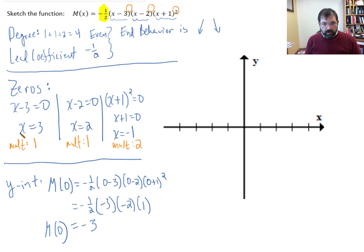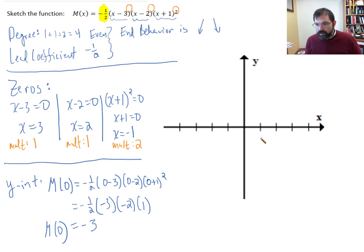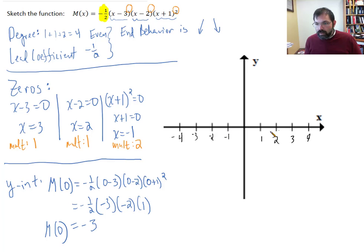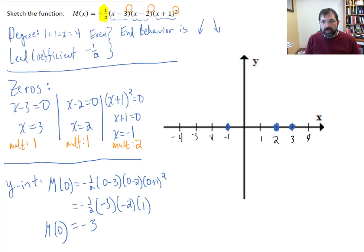Now let's plot the zeros. Using a scale of 1s on the x-axis: 1, 2, 3, 4, and negative 1, negative 2, negative 3, negative 4. The zeros are at x equals 3, x equals 2, and x equals negative 1. The end behavior is down-down, so a little to the left of the leftmost zero it goes downward, and to the right of the rightmost zero it goes downward as well.